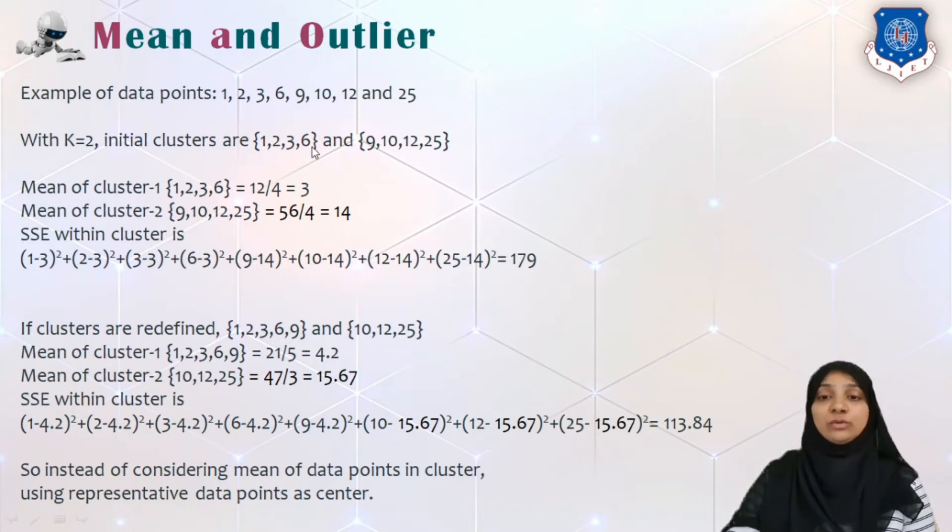Initial clusters will be 1, 2, 3 and 6, and another cluster will be generated as 9, 10, 12 and 25. Now we know that after finding initial clusters we have to adjust the mean. So mean of first cluster is calculated as 1 plus 2 plus 3 plus 6 divided by 4 which is equal to 3, and mean of second cluster will be calculated as 9 plus 10 plus 12 plus 25 divided by 4 which is equal to 14.